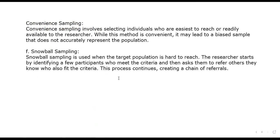In convenience sampling, it involves selecting individuals who are easiest to reach or readily available to the researcher. This method is very convenient, but it is somewhat biased because it doesn't accurately represent the entire population.